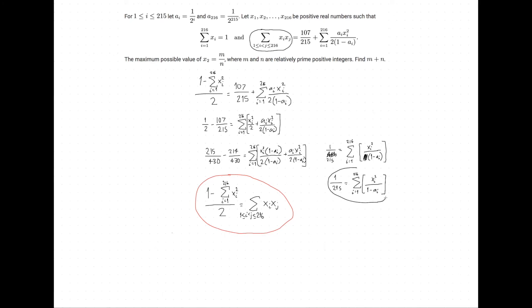Looking at this equation, we might feel stuck because we know the sum of the x_i terms but not much about x_i squared, especially divided by (1 - a_i). We know all the a_i terms, but the changing denominator for every x_i² term makes it hard to work with. However, the problem asks for the maximum value of x2, so maybe we should try putting bounds on this equation using a famous inequality.